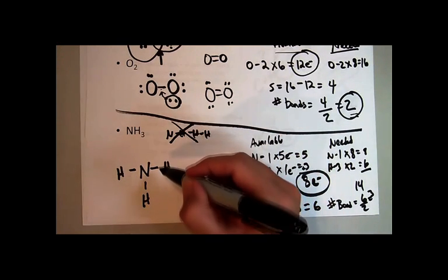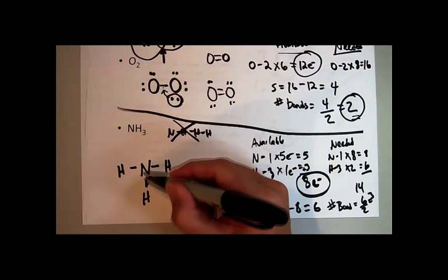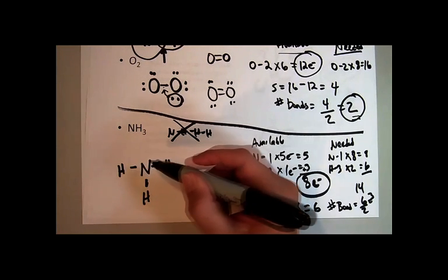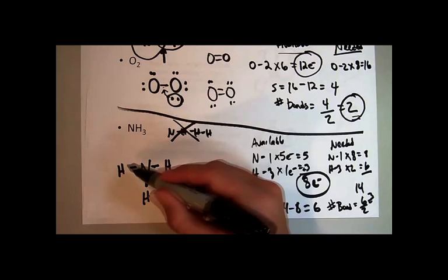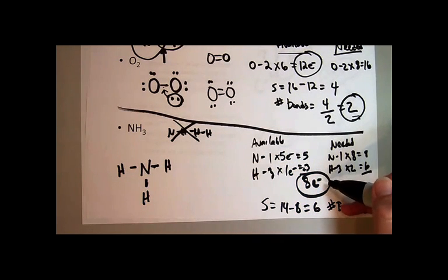It can only have two. And so I can see when I put this thing together, remember each dash is a pair of electrons. I've used two, four, six of my eight available electrons.